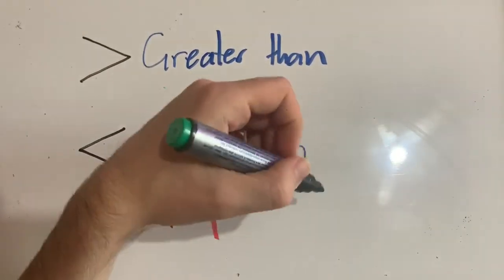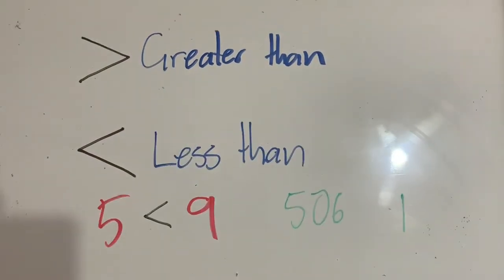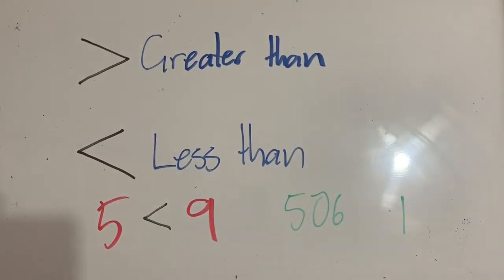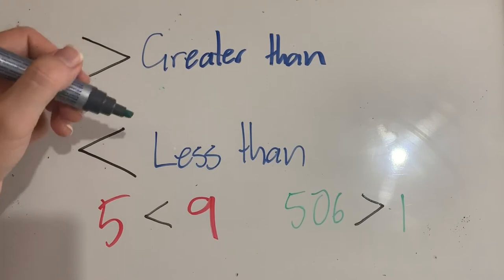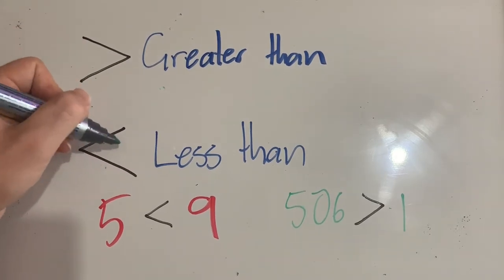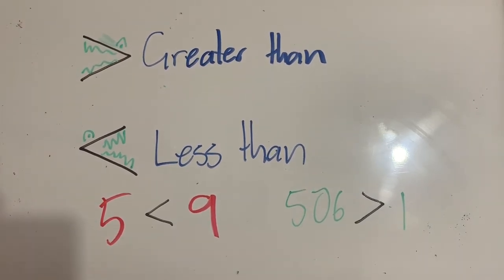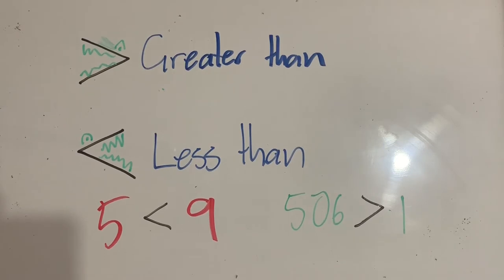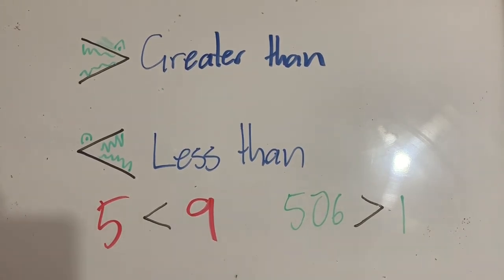Similarly, if we had some other numbers — let's say 506 and one — 506 is obviously larger than one, so we would use a greater than sign. An easy way to remember which way is which is to imagine that these are the mouths of a crocodile, and the crocodile always faces the larger number. So the crocodile opens its mouth towards the nine, and here towards the 506. It will always look at the larger number.